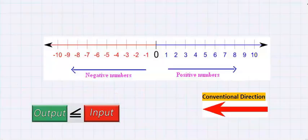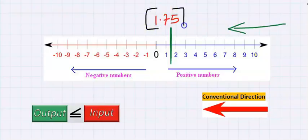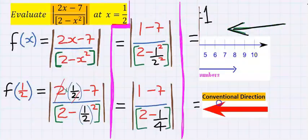1.75 is between 1 and 2. The greatest integer function conventionally goes towards the left only and accepts only integers as output. Hence, the greatest integer function of 1.75 is 1, which is the next integer towards this direction. Therefore, everything at the denominator is equal to 1.